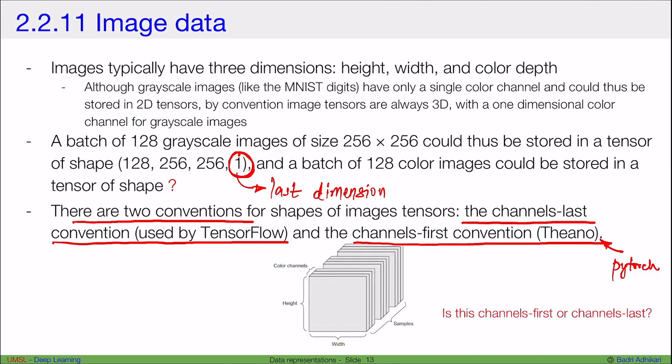So we have a tensor that looks like this. We have samples. So this is my first image, here's my second image, and here's my third image. So this is my first, second, and third image. We have the image's height, we have the width, and these three channels represent the color channels. So and then this axis overall represents the samples. So the question is, is this channels-first or is this channels-last? The answer is we don't know.